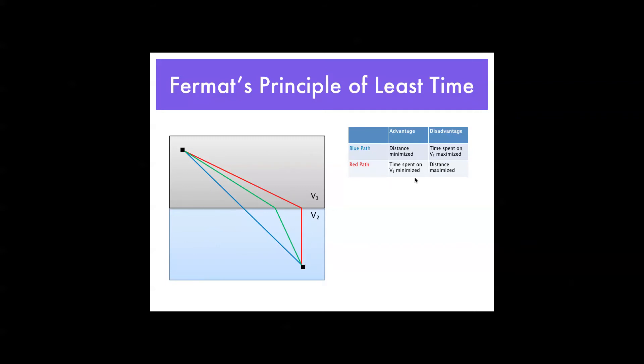Well, these are the advantages. There are disadvantages as well, though. As you'll notice, one's advantage is the other's disadvantage. So, the disadvantage for the blue path is that time spent on V2 is maximized. The disadvantage for the red path is that overall distance is maximized.